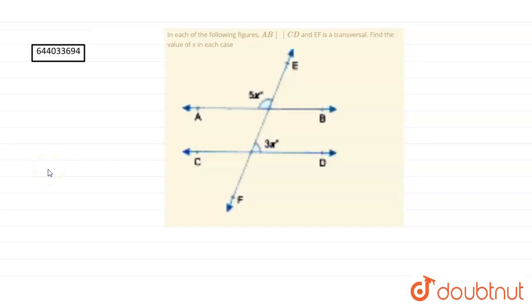says that in each of the following figures, AB is parallel to CD, F is transversal. Then we have to find the value of x in each case. So for solving this question, let us assume this is point M and this is point N.